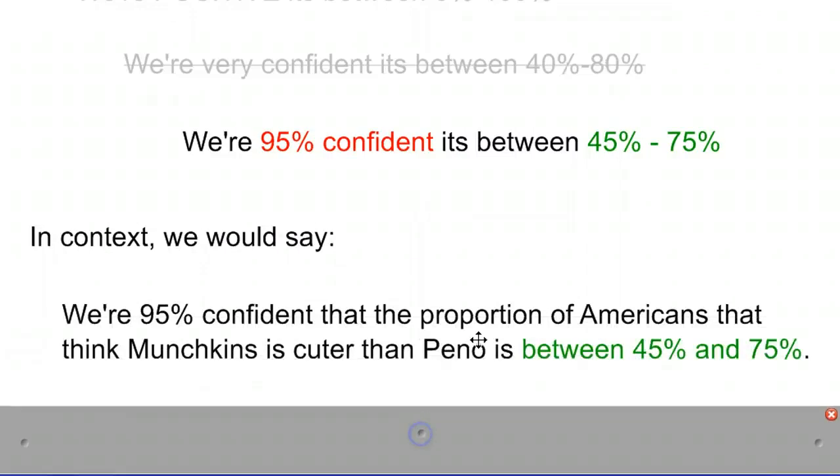Now, in context, let's figure out what this 95% confidence interval really means. We're 95% confident that the proportion of Americans, because remember we sampled Americans, that think Munchkin is cuter than Pinot, thinks the puppy is cuter than the kitty, is between 45 and 75%. There's a 1 in 20 chance, a 5% chance, that this interval, which is really wide, is still wrong. It's possible that that interval is still wrong, but we're pretty confident, 19 out of 20 times, we're going to be right when we say this statement here, that the real population thinks 45% to 75%.